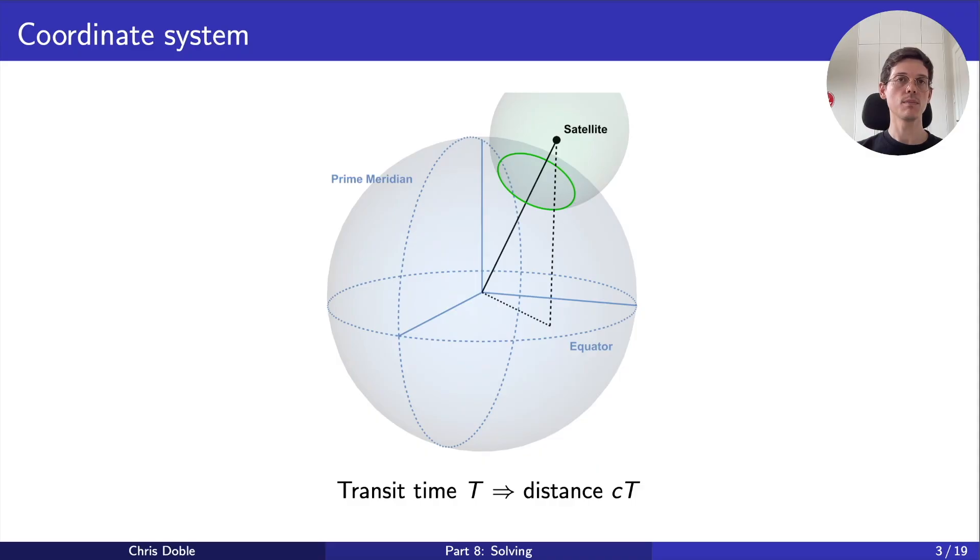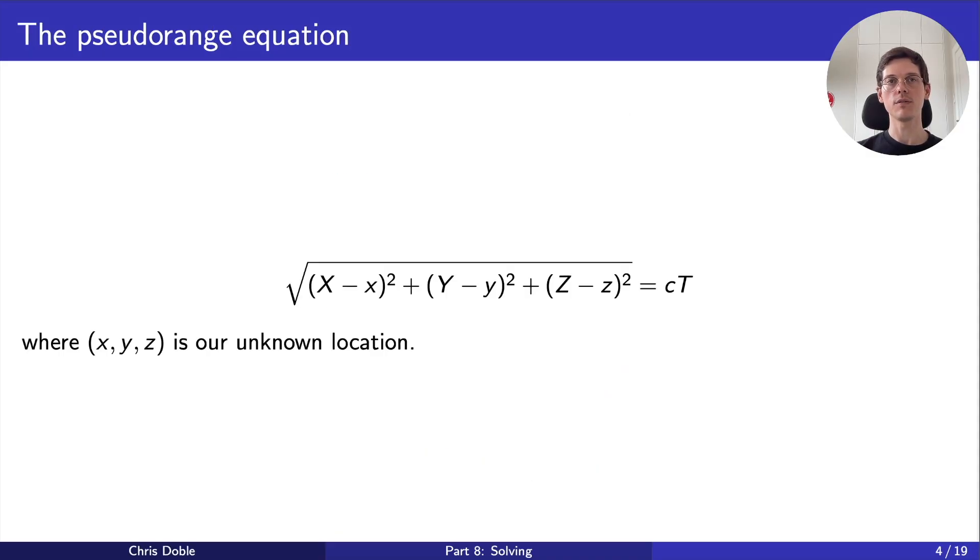We can express this mathematically. On the left-hand side of this expression, we've used the Pythagorean theorem to calculate the distance between us and the satellite, where we've denoted our unknown location lowercase x, y, z. On the right-hand side, we have the distance the signal traveled, c times T. Let's subtract this term from both sides, making everything equal to zero. This will make things a little easier for us later.